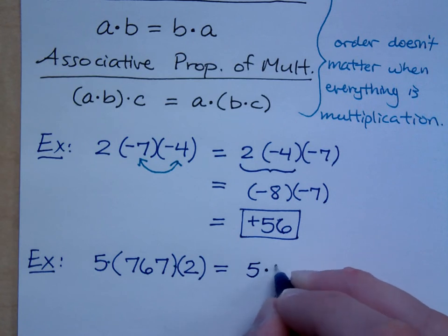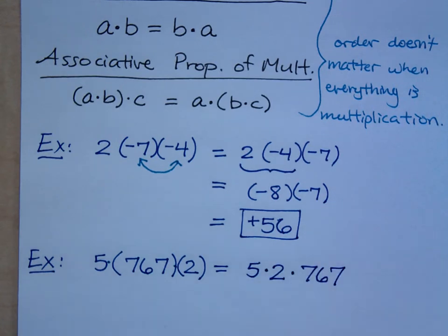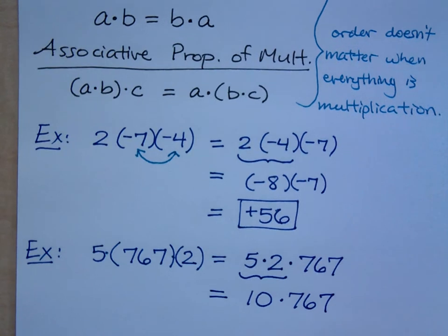I can do 5 times 2 first, and then times 767. Why would I do 5 times 2 first? It's a lot easier. What's 5 times 2? That's 10. And then I love multiplying times 10 because I just have to do what? So my answer is what?